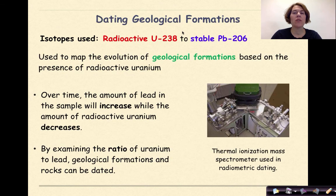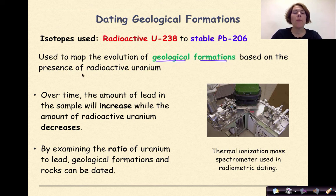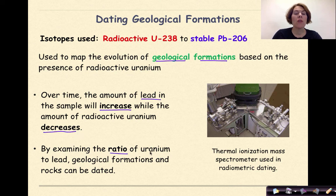Dating geological formations. The isotope used is radioactive uranium-238, which decomposes into stable lead-206. It is used to map the evolution of geological formations based on the presence of radioactive uranium. Over time, the amount of lead in the sample will increase while the amount of radioactive uranium will decrease. By examining the ratio of uranium to lead, geological formations and rocks can be dated.